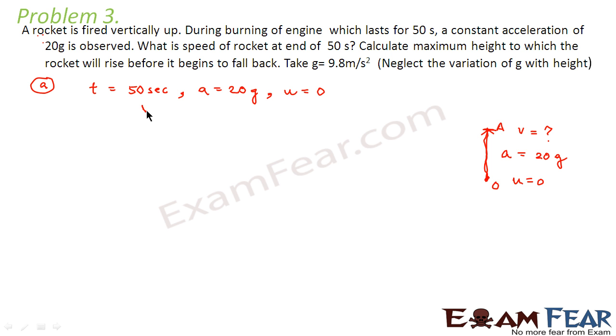Now from the first equation of kinematics we know v is equal to u plus at. So we can write it as u is 0. So a we can write as 20g into t. So this will come out to be 20 into 9.8 into 50. So this comes out to be 9800 meters per second. So that means this would be the velocity at the end of 50 seconds. That means at point A.